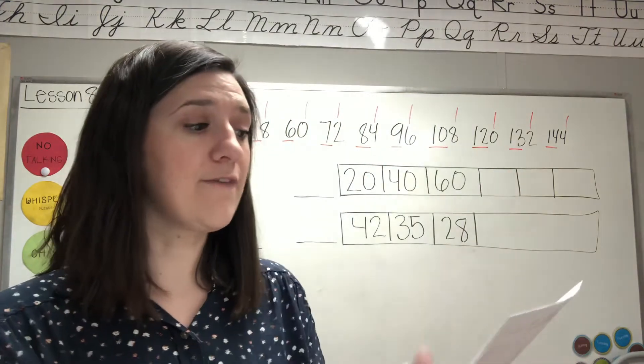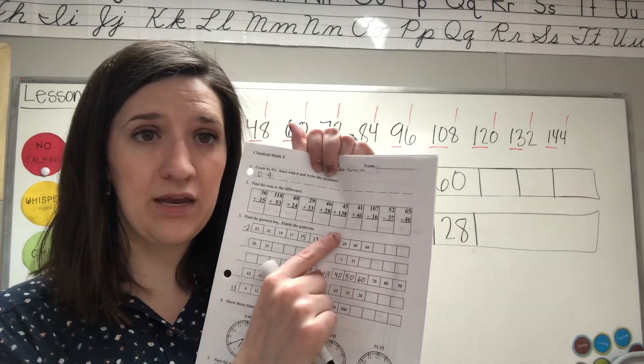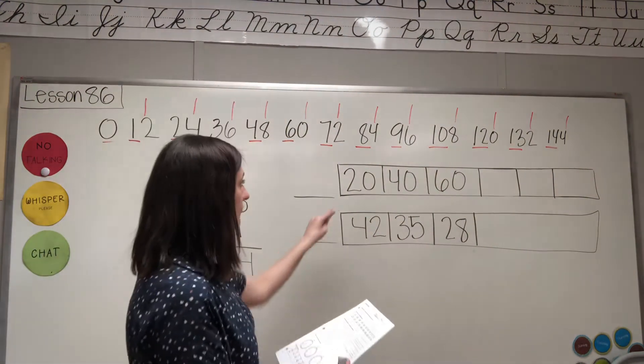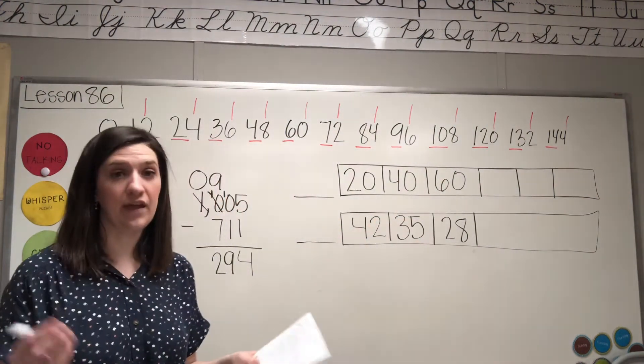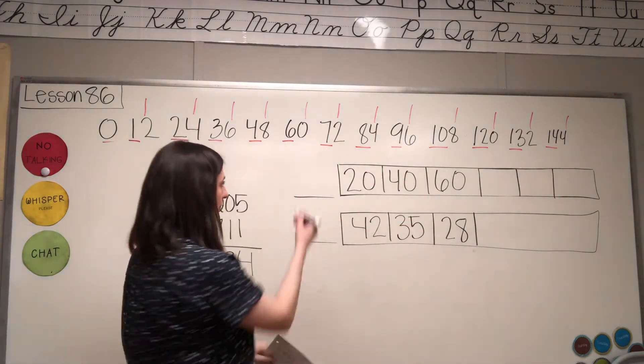Okay, I'm gonna help you with this one here and this one here because they're a little bit more tricky. The first thing you have to look at and see is: is my pattern getting bigger or is it getting smaller? 20, 40, 60, it's getting bigger, so I will write plus because it's getting bigger.